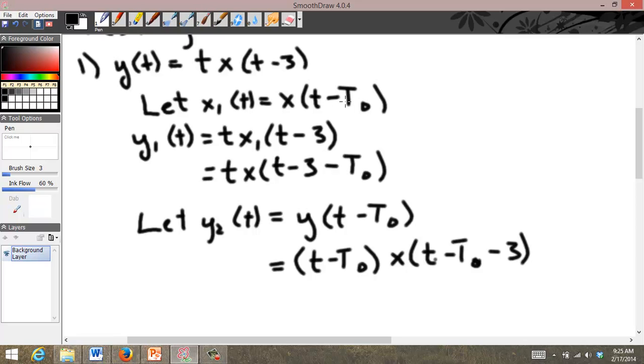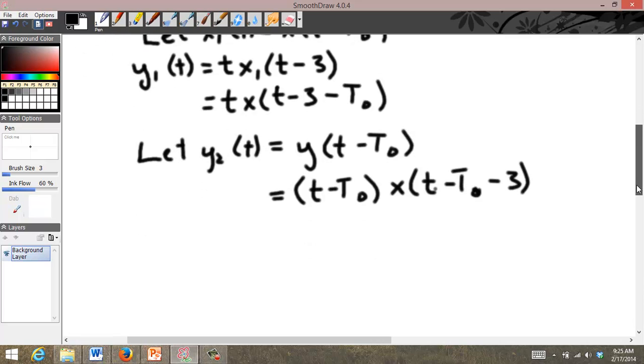They are the same in this particular example, but that gets to the key about what's happening inside the parentheses here. In this case, I had t minus t0. This is now the only function of time that I then apply the output process to, whereas in this case, I apply the t minus t0 to the t.